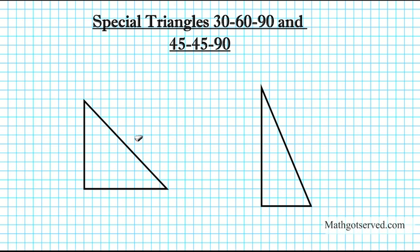Let's go over what the special triangles look like first, then we'll use them to solve problems. This is the 45-45-90 triangle — this is the 90 degree angle, this angle is 45, and this angle is 45 degrees. It's a nice triangle because the base angles are congruent, meaning the sides opposite them are congruent. The hypotenuse is root 2 and the legs are 1 and 1.